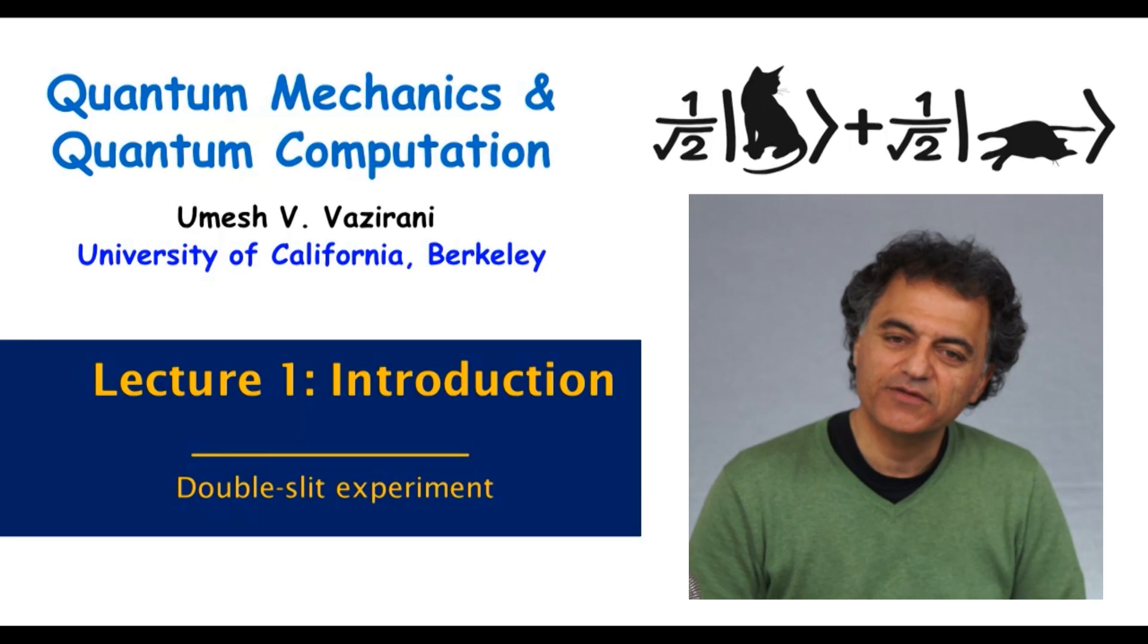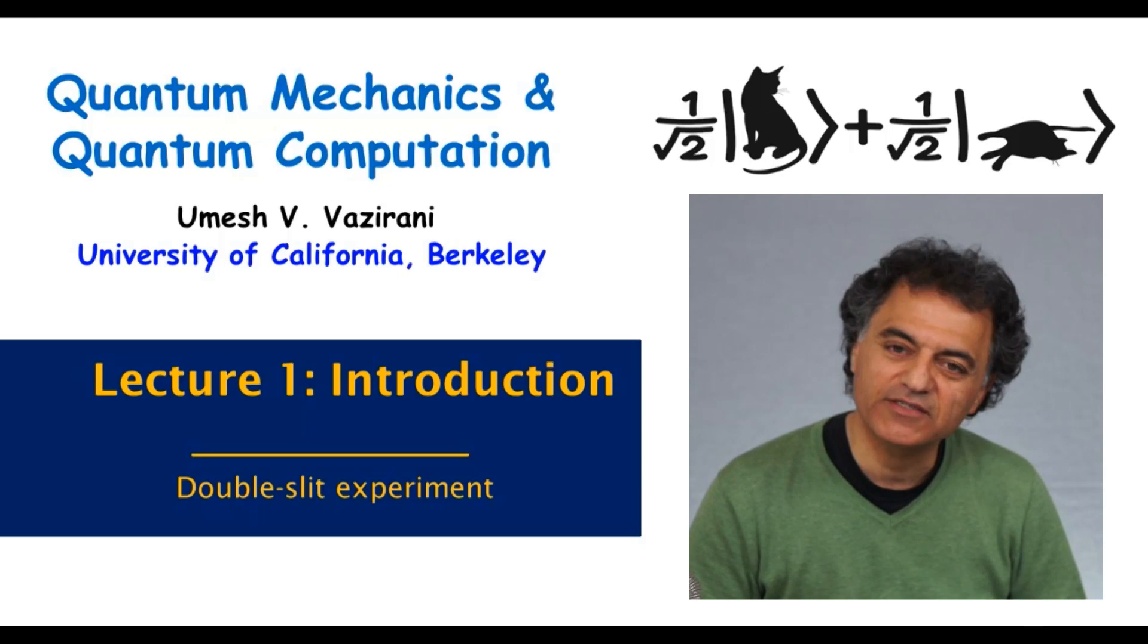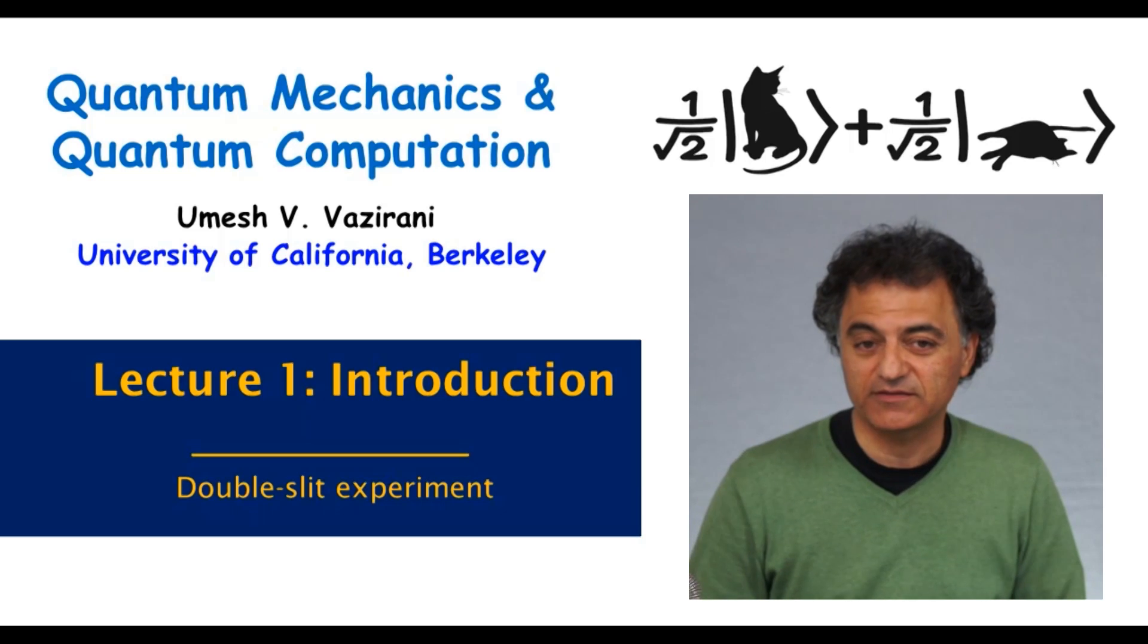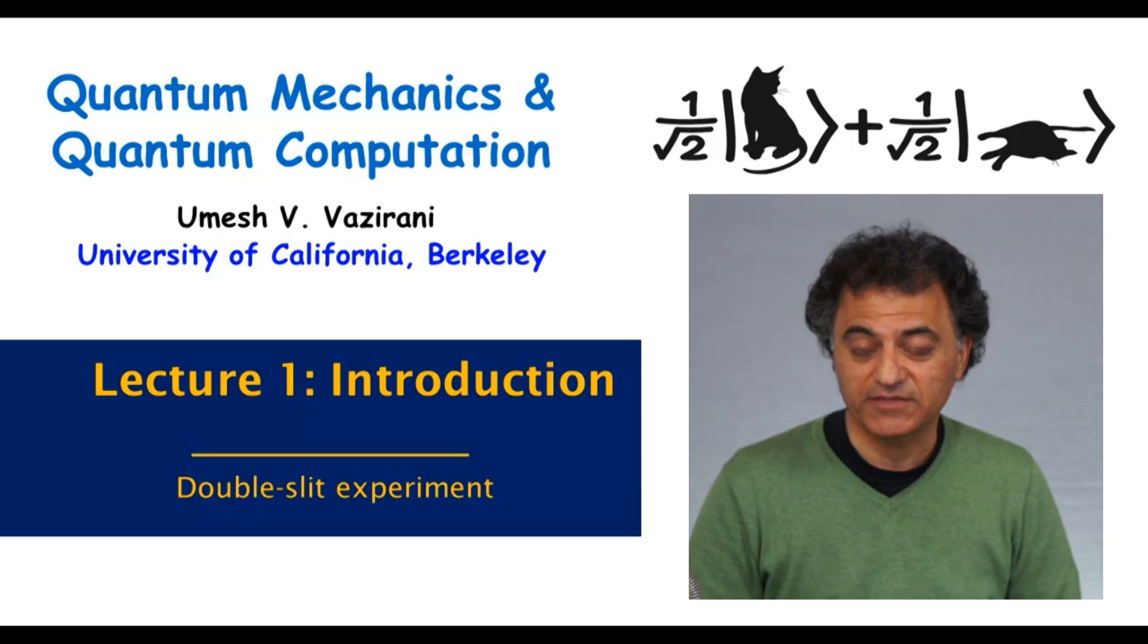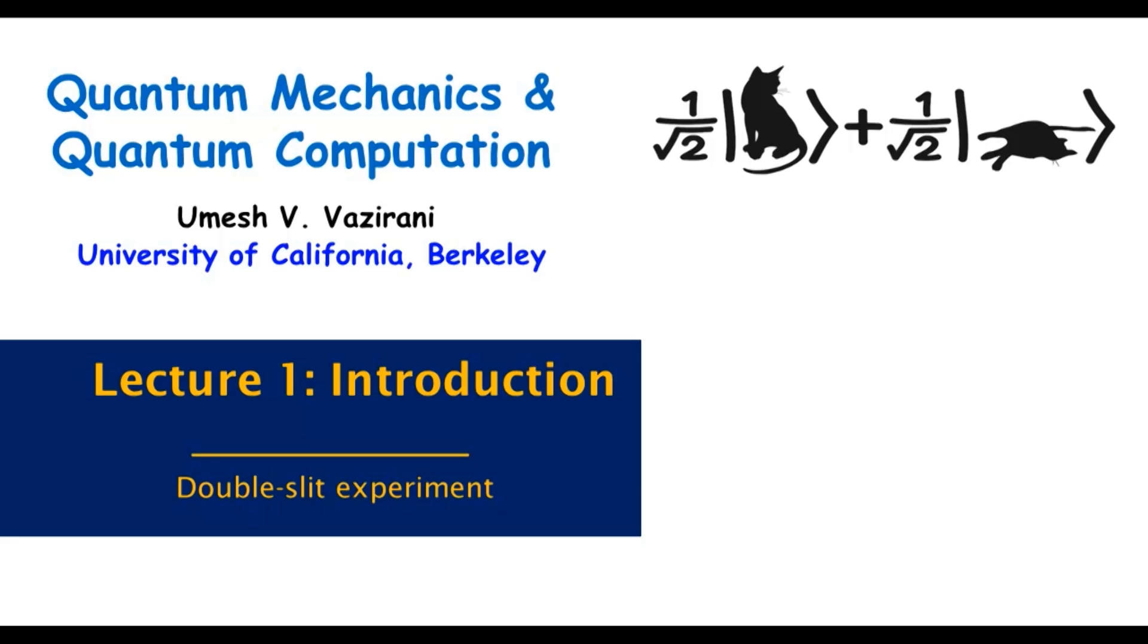In the last video we saw very strange behavior of elementary particles in the double-slit experiment. On one hand they behave like particles—they are discrete, you always see some integer number of them. On the other hand, they demonstrate this interference pattern when the two slits are open.